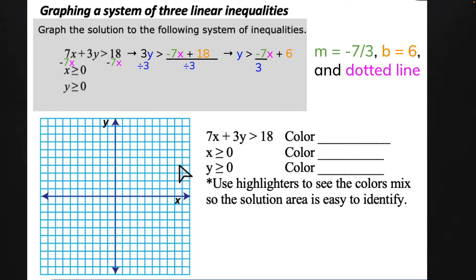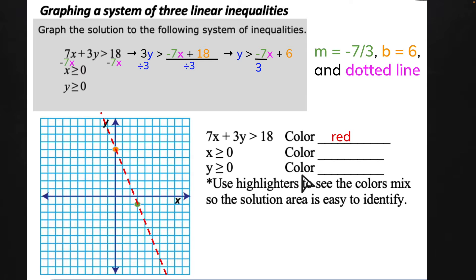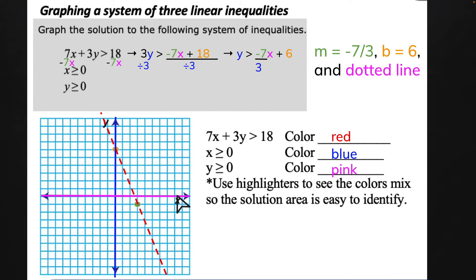My slope is negative 7 thirds and my Y-intercept is 6. It's a dotted line because it's greater than, not greater than or equal to. I start at my Y-intercept at 6, then go down 7 and right 3 for my second point, drawing a dotted red line across. Now for the constraint pieces: x is greater than or equal to 0 is the Y-axis — it's a solid blue line. And y is greater than or equal to 0 is the X-axis — a solid pink line.